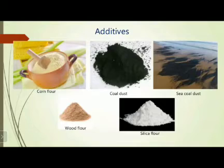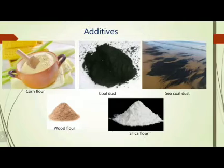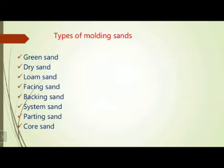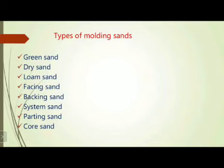Silica flour is another additive added to our molding sands. Coming to the types of molding sands: green sand, dry sand, loam sand, facing sand, backing sand, system sand, parting sand, and core sand — these are all the molding sand types. Molding sand is a mixture of silica sand, clay, and binder, but according to the place of use it may be classified into different types — totally 8 classifications are shared on screen.